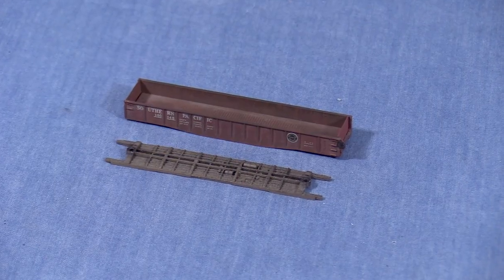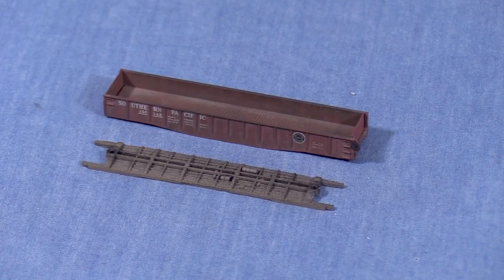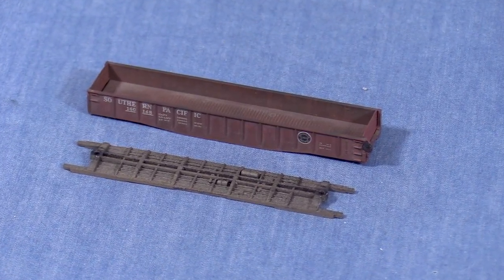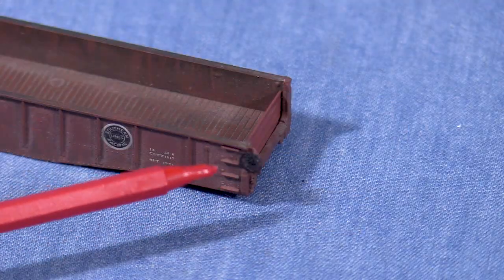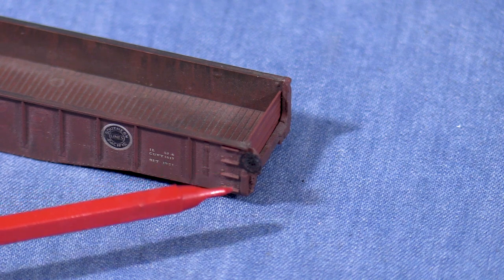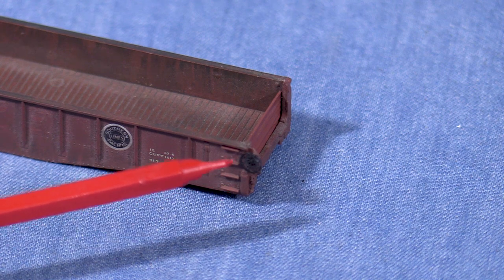This is an old Microtrains gondola with drop ends that I've had for many years. As you can see, this one is in two pieces. After so many years a few parts became broken or missing. The car has a little weathering but is otherwise unaltered. I've already replaced the brake wheel with a new Microtrains part.